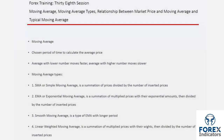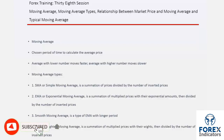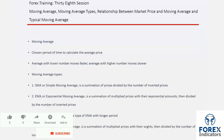Moving average is the average of a price in a certain number of timeframes which can be customized by traders. A moving average determined with a lower number of timeframes would have faster movement, while more timeframes would slow down the MA displacement since there is more data calculated in the average. MA is classified into four types: simple, exponential, smooth, and linear weighted moving average.